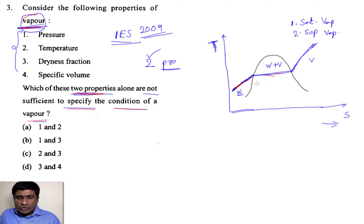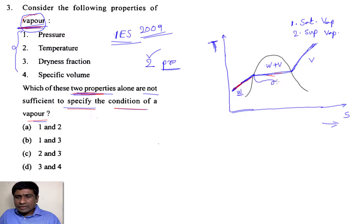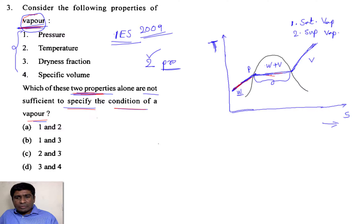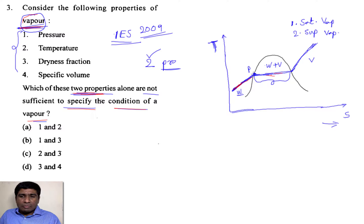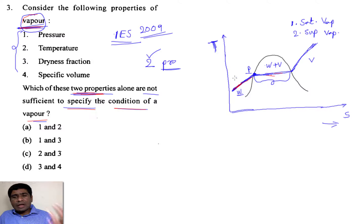We already know that we need two parameters to identify the state. If I take this section inside the dome and I know the pressure, automatically I can calculate the temperature. Why? Because for the saturation state, the pressure and the temperature are not independent — they are dependent. If you know the value of pressure, automatically you can calculate the value of temperature.